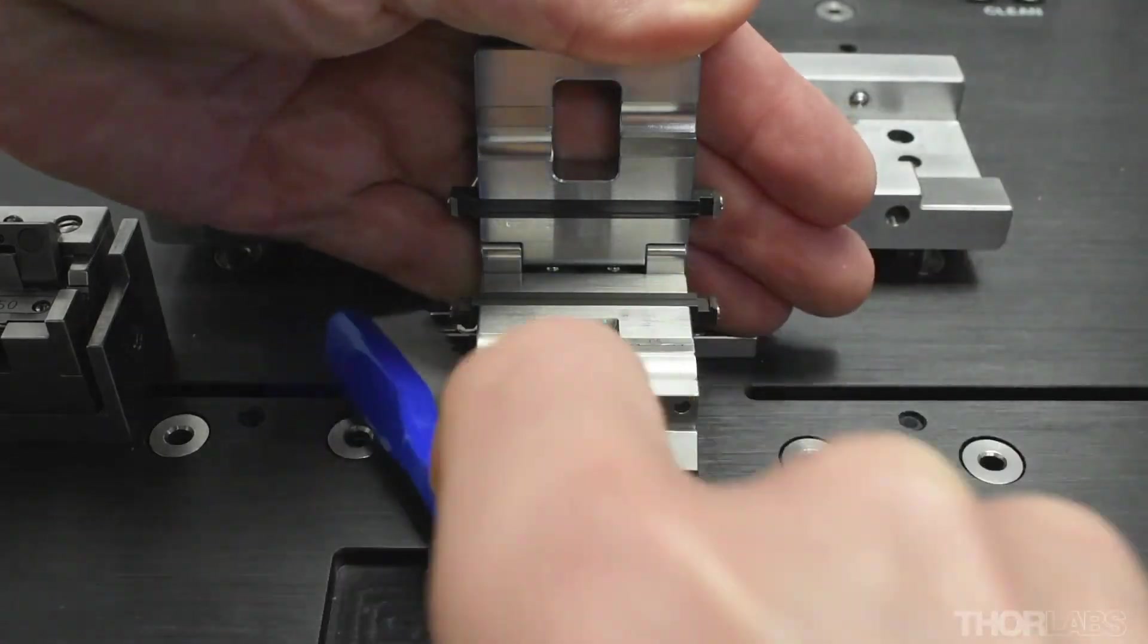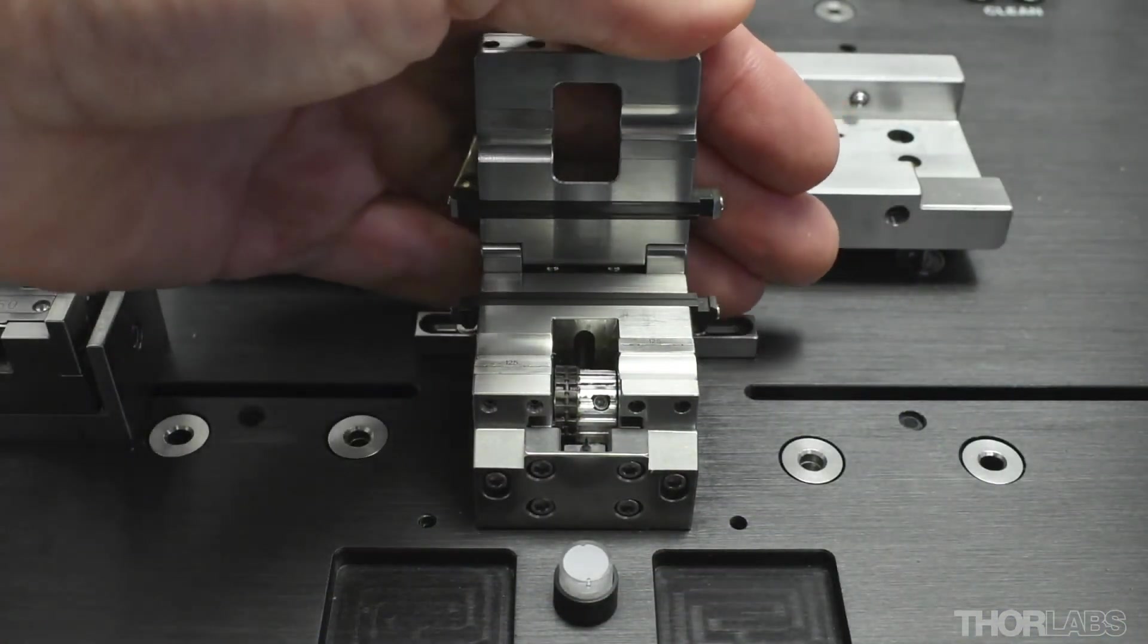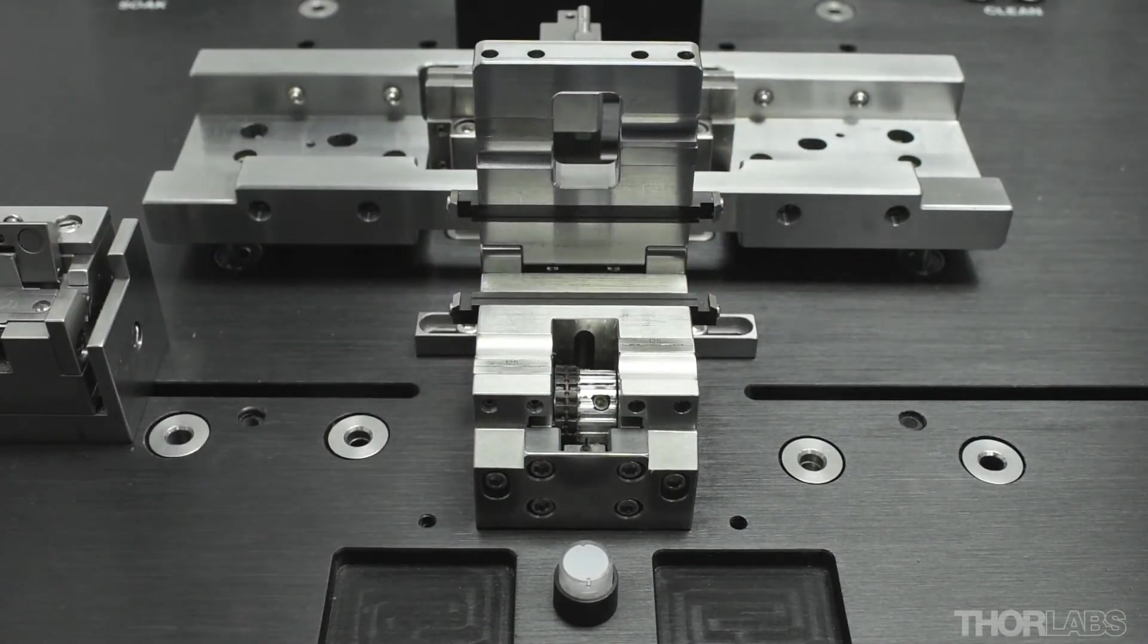Debris will fall down onto the top surface of the unit around the stripping block, so make sure you brush down this area as well to ensure that the splicer is free of debris.